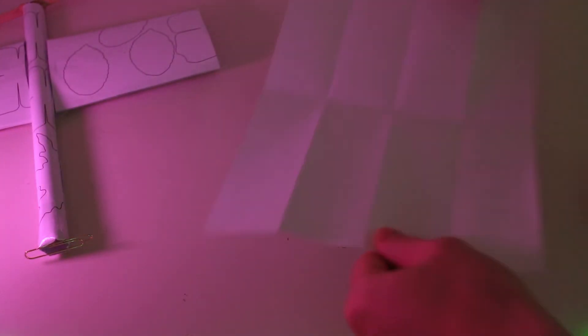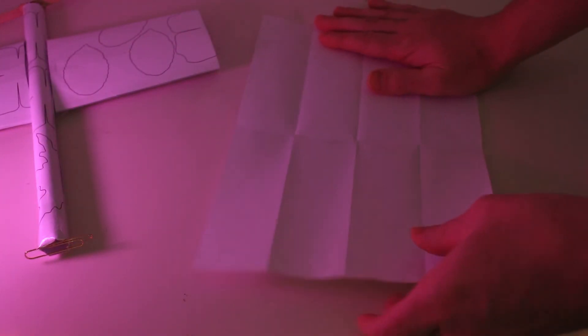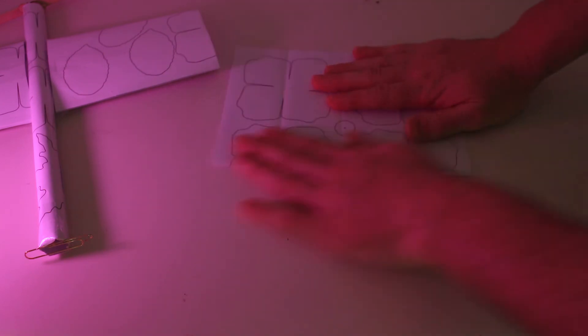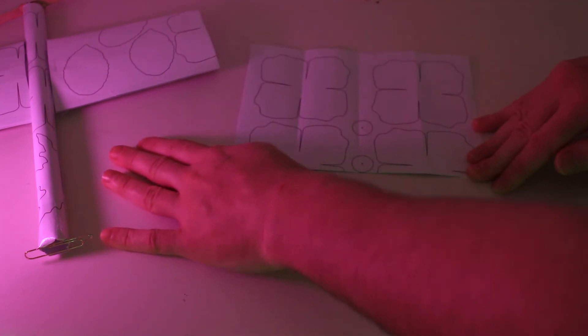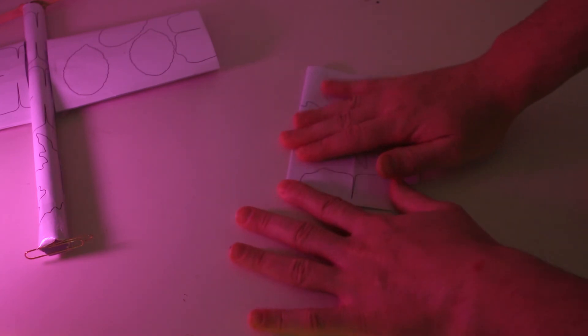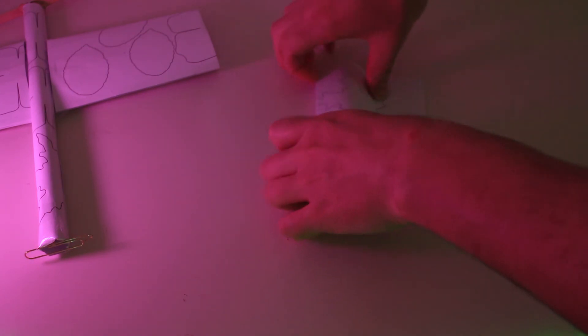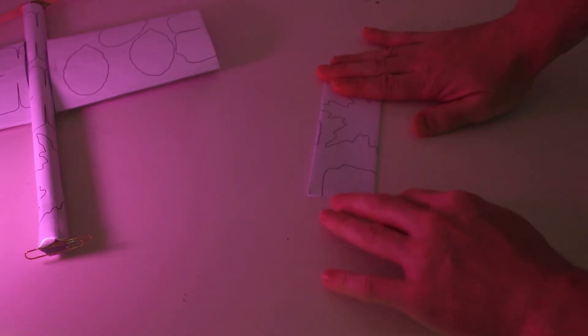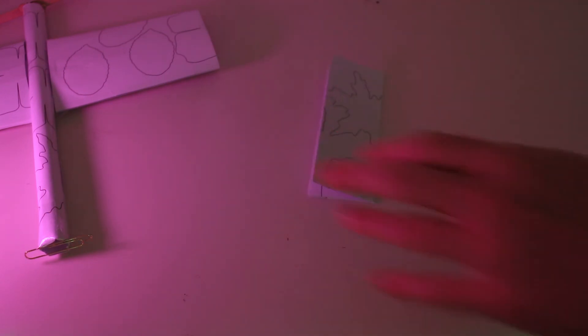Now we need to do the tail wing. Get an A4 piece of paper, fold it in half, then fold it in half again, and then once more. Stick it down with some sticky tape along the flappy end.